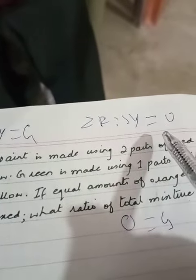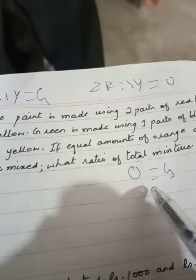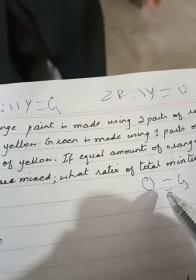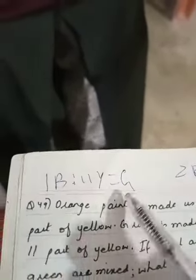Orange has two reds, one yellow. Green has one part blue, eleven parts yellow. If you have equal amounts of orange and green, then how much is yellow? Let me think a little bit.